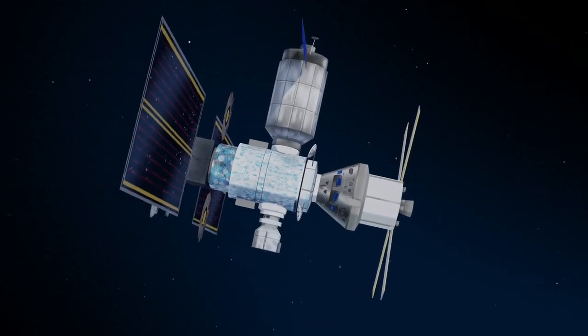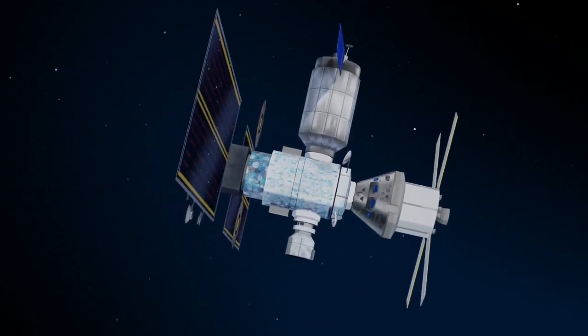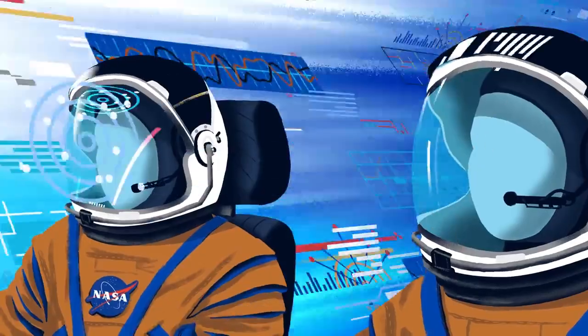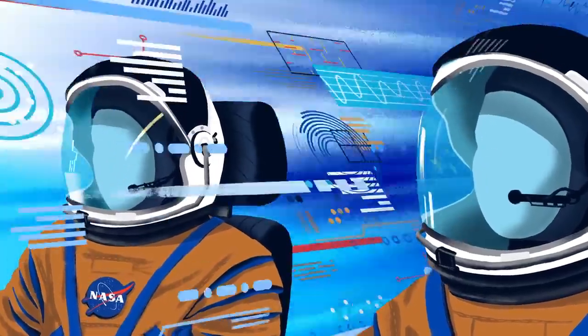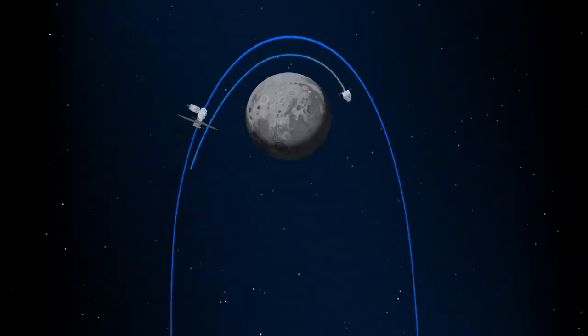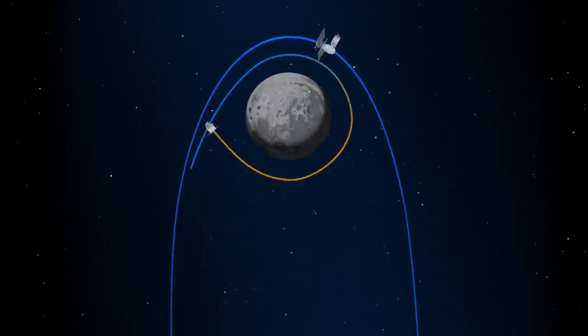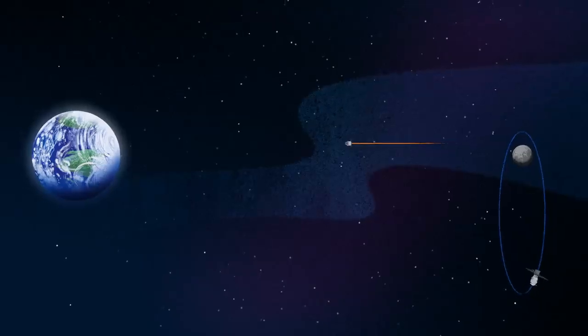Once back aboard the Orion spacecraft and undocked from Gateway, the crew fire their engine once to break out of the halo orbit, and once again to sling the spacecraft around the Moon, placing it on a multi-day trajectory back towards Earth.